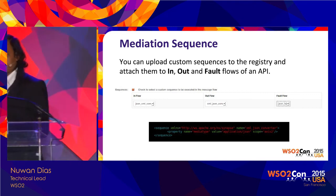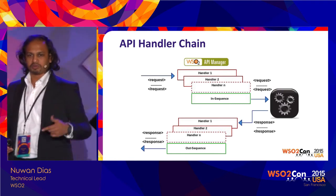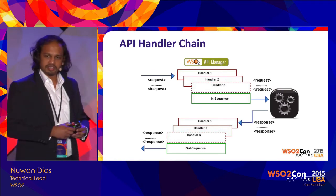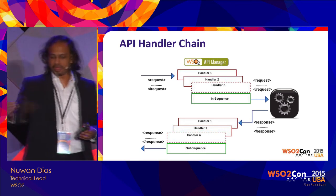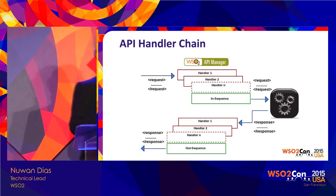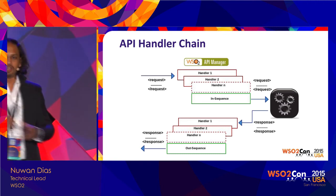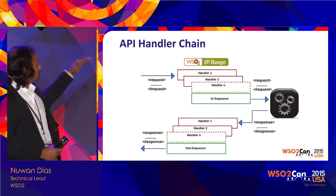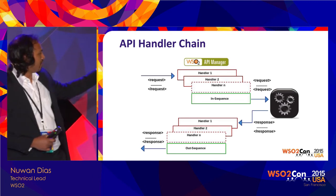Moving from sequences and message mediation policies, we come to handlers. Each API has a set of handlers that are executed in its request flow and response flow. When a message is received on the Gateway, before being handed over to the in-sequence, it goes through a predefined set of handlers. As you can see in this diagram, it goes through that set of handlers and then into the in-sequence, and the same sequence of handlers executes in the response flow as well.